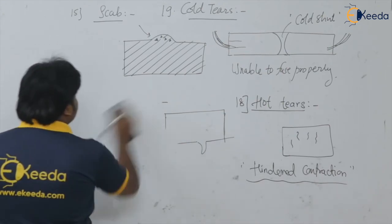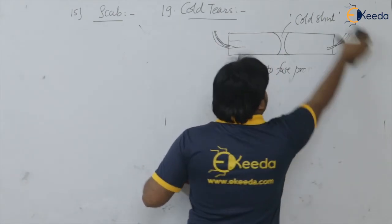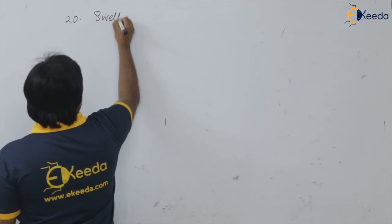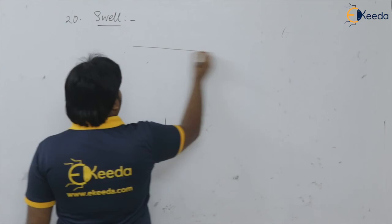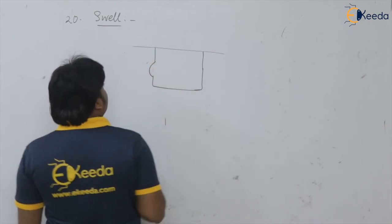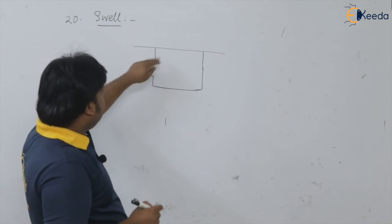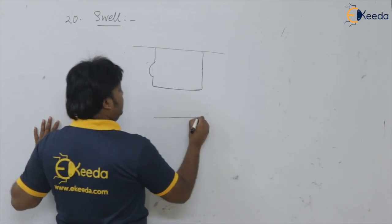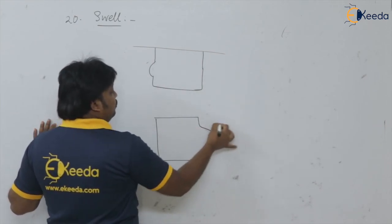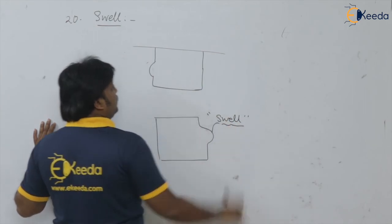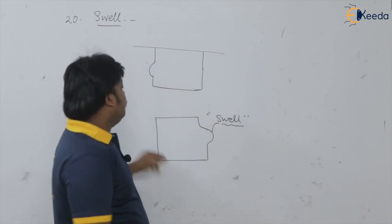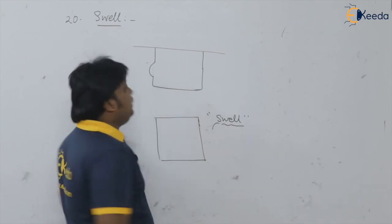The last defect is the swell. If the sand is very soft and has a deformation property, during making the mold, some deformation of the sand takes place in the mold cavity. Definitely this impression will result onto the casting surface — the casting will look deformed. This is known as swell, taking place because of deformation. We have to take care of the molding sand so that such deformation cannot take place, and you will get the proper shape as in the mold cavity.